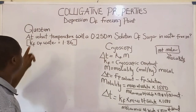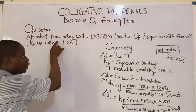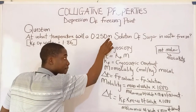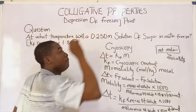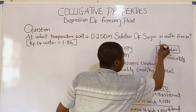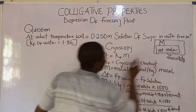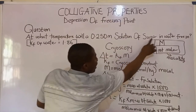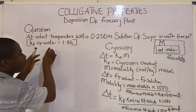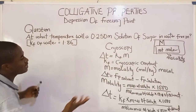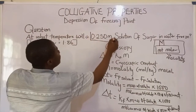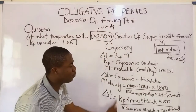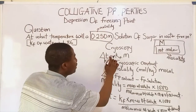Let's quickly attempt the first question. The question asks: at what temperature will a 0.25 molal solution of sugar in water freeze? They are giving us the Kf of water, which is the solvent. The molality is already given, so this molality formula will not be needed. We just use the first formula.